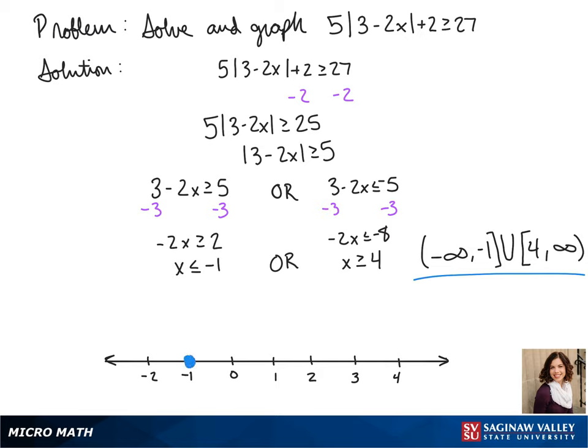To graph this, we fill in a circle on negative 1 and on positive 4 to show that they could be possible answers. And then our arrows point outwards.